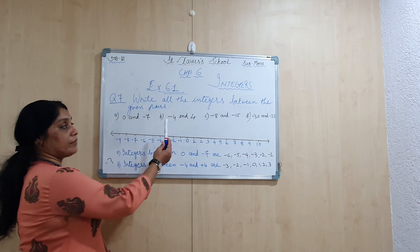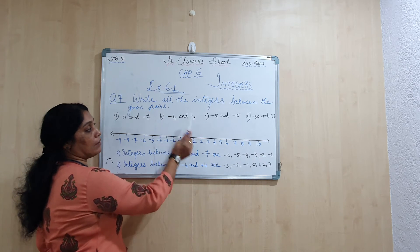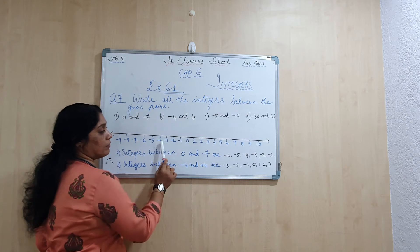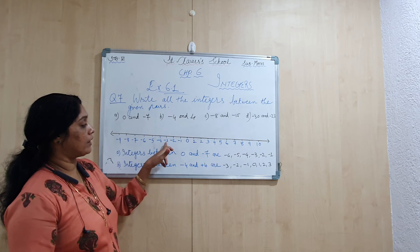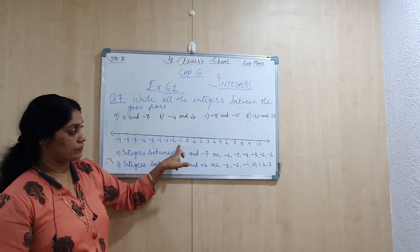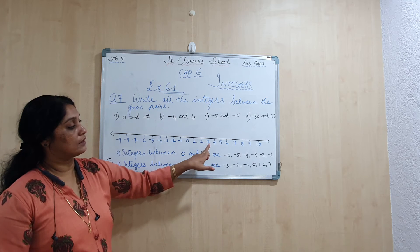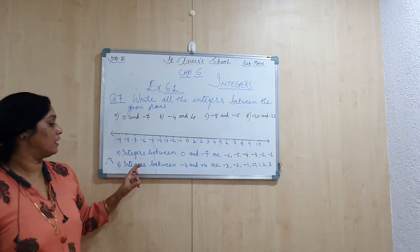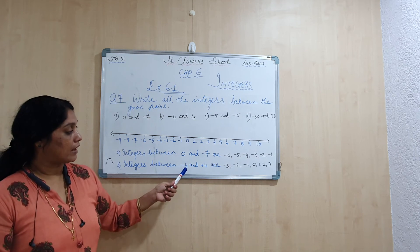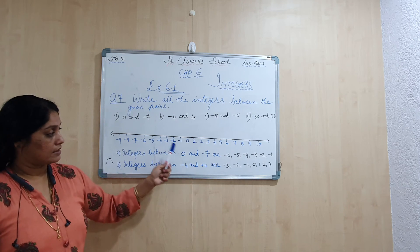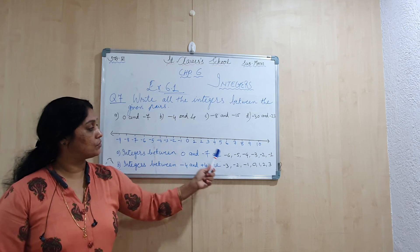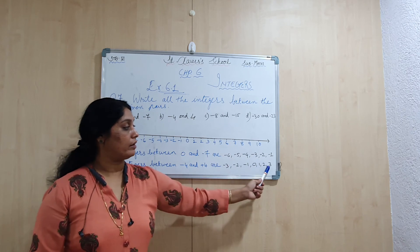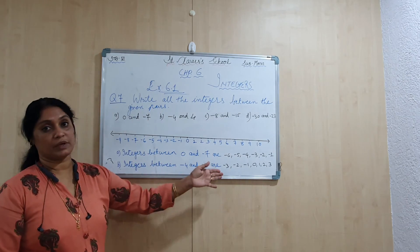Now let's see part B: minus 4 and plus 4. On the number line the integers between them are: minus 3, minus 2, minus 1, 0, 1, 2, 3. So integers between minus 4 and plus 4 are minus 3, minus 2, minus 1, 0, 1, 2, 3. This is the answer for part B of question number 7.